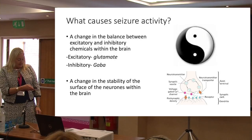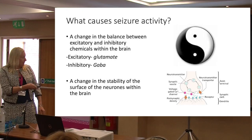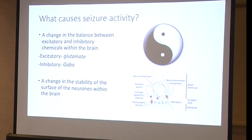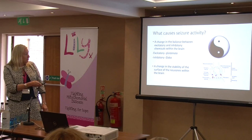What causes seizure activity? It's quite helpful to think fairly simplistically about a balance between the excitatory and inhibitory chemicals within the brain. The excitatory neurotransmitter is glutamate, and the inhibitory is GABA — it's a bit of a yin-and-yang situation. You can also think about the stability of the surface of the neurons in terms of the balance of calcium and sodium.